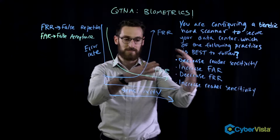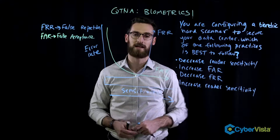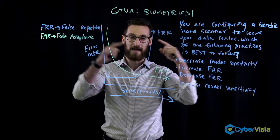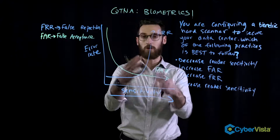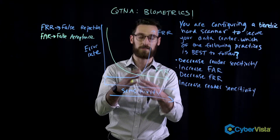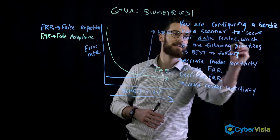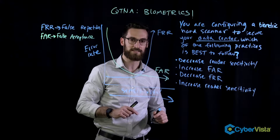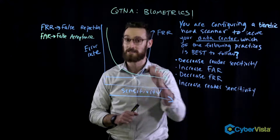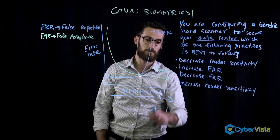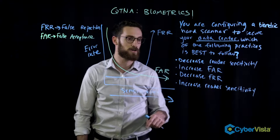The question is asking: you are basically setting this up for a data center. What's the best practice? That last detail is the key to getting this question right. There could be considerations for balancing both the FRR and the FAR, but it says data center. Does a data center hold sensitive data? Absolutely. Would you want to prioritize security or convenience? Definitely security. So you basically want to decrease the number of FARs, or increase the sensitivity.